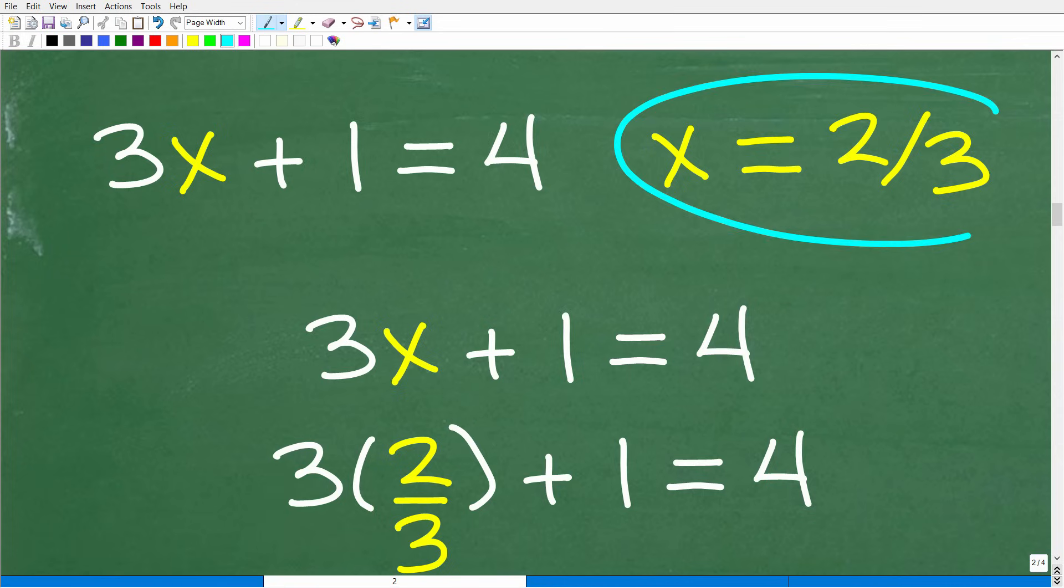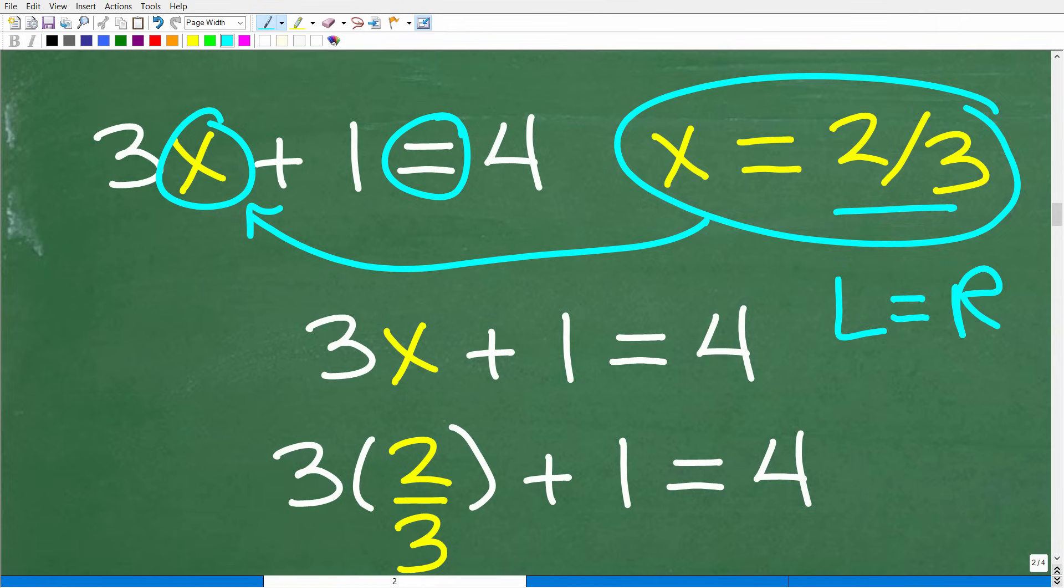OK, so if x is equal to two thirds, if this is, in fact, the correct solution, well, what we can do is replace this x with two thirds. OK, so we'll plug in this two thirds. We'll replace this x with two thirds. And then we're going to see if the left hand side is equal to the right hand side, because when you have an equation in algebra, we're making a statement. We're saying that the value of the left hand side is equal to the value of the right hand side.